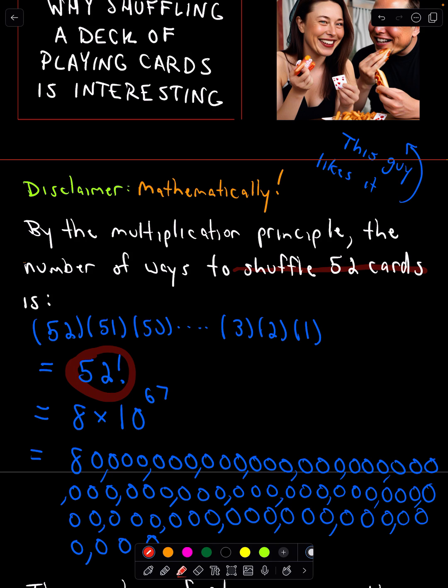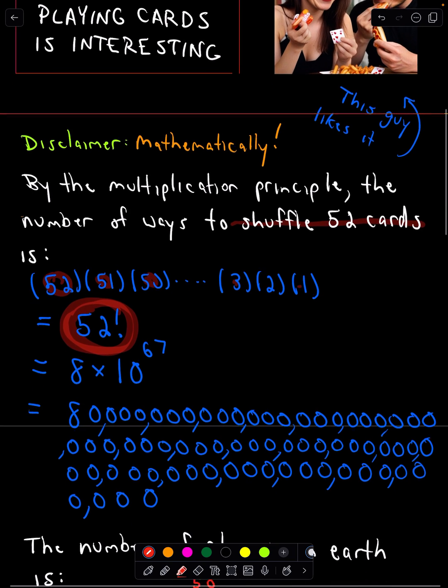And the number of ways, we would get 52 times 51 times 50 down to 3 times 2 times 1. We would hit every number in between. And that's the same thing as 52 factorial.